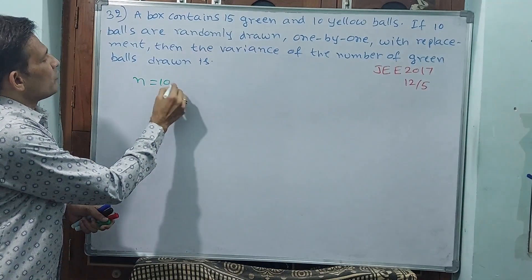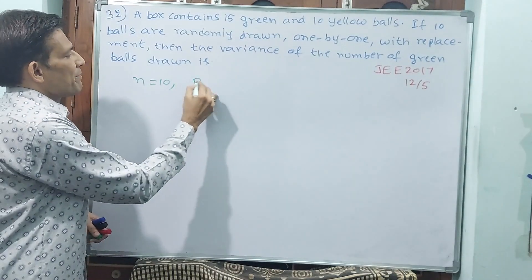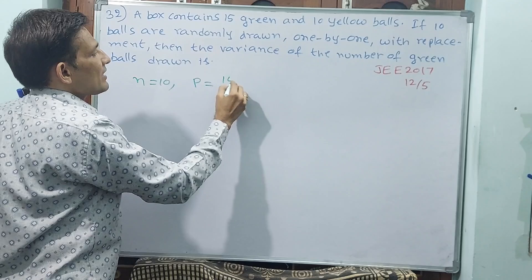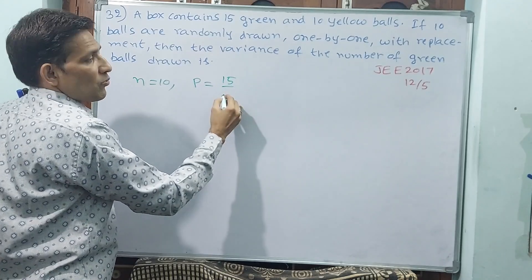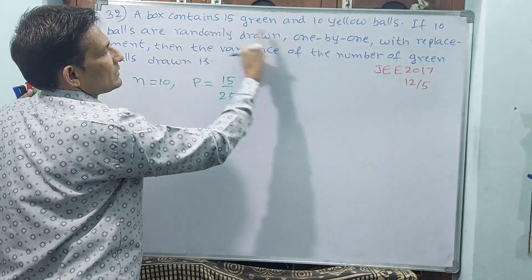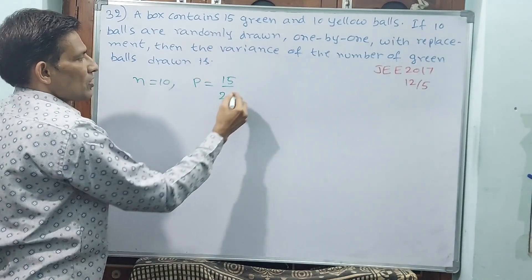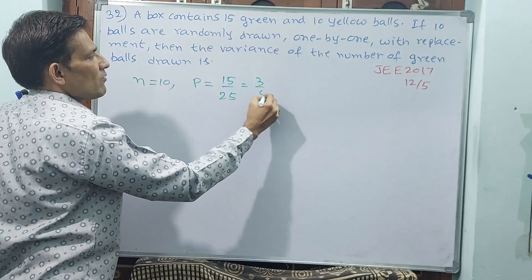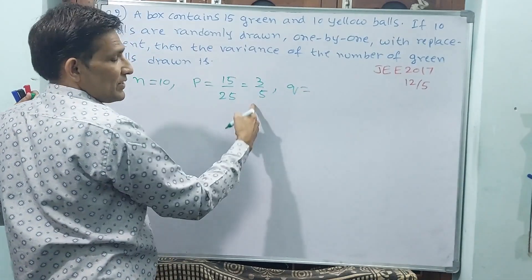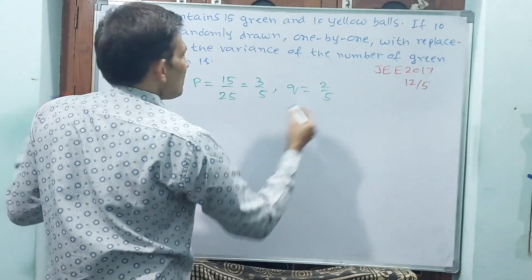The variance of the number of green balls drawn is what is being asked. So, 10 balls we are drawing means n is equal to 10. And p — total 15 green balls are there from 25 balls. Number of green balls drawn: 15 by 25, that simplifies to 3 by 5. Then q is 1 minus 3 by 5, which is 2 by 5. So 2 by 5 will be your q.